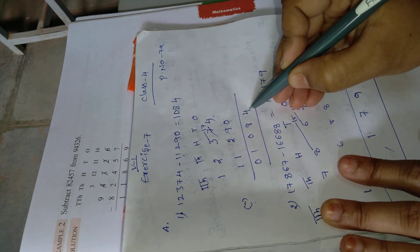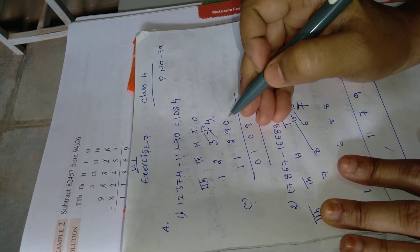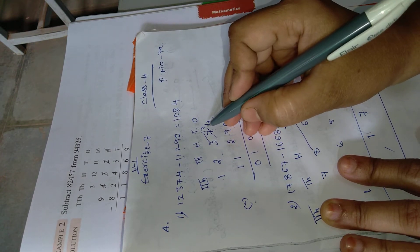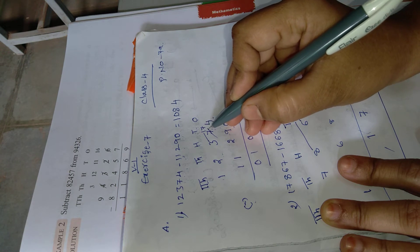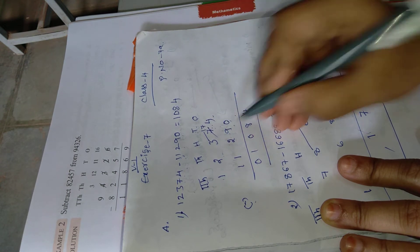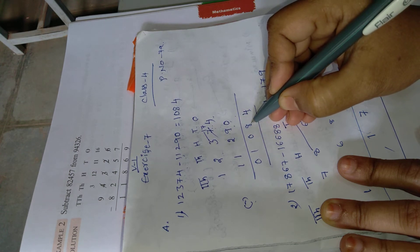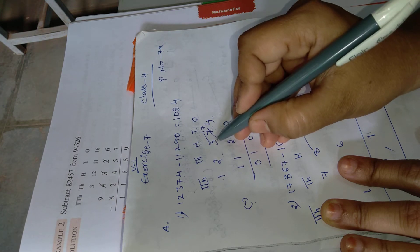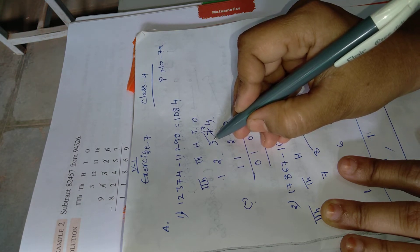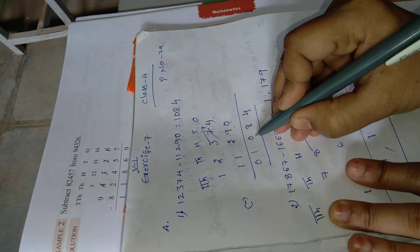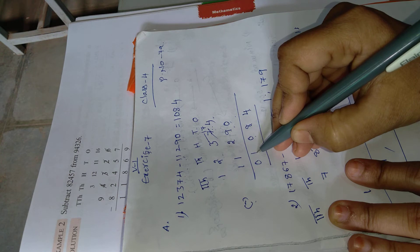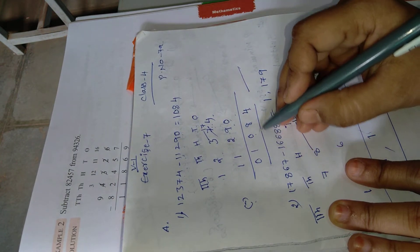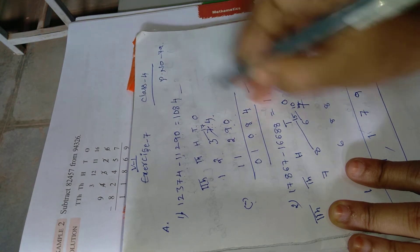4 minus 0 equals 4. Next, 3 minus 2 equals 1. Borrow taken, 12 minus 1 equals... So how much is the answer? 1,084.